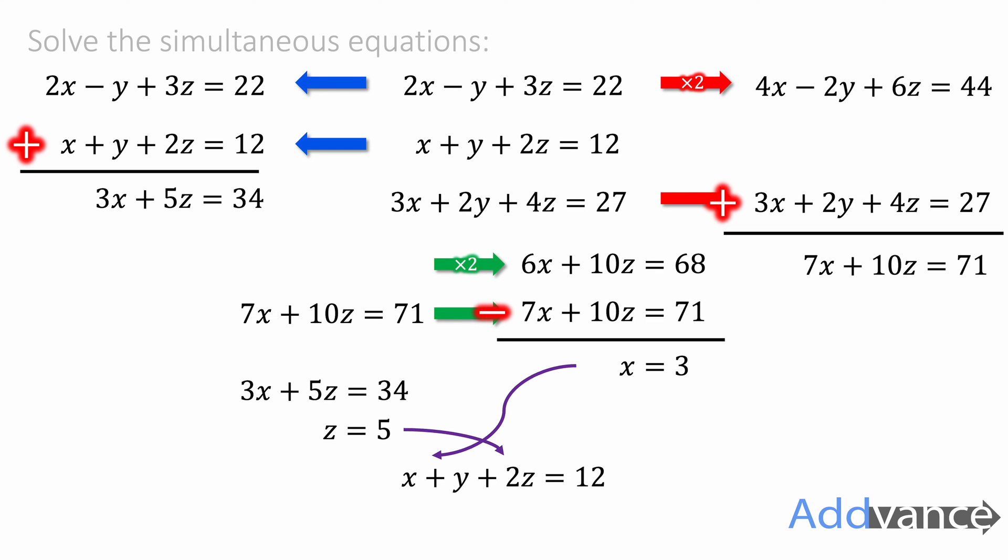Now we're going to substitute that into one of our original three equations. x is equal to 3 and z is equal to 5. We substitute those in and we get this. 2 times 5 is 10. 3 plus y plus 10 is 12. y plus 13 is 12.